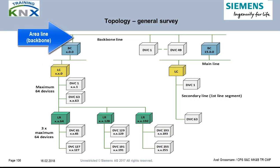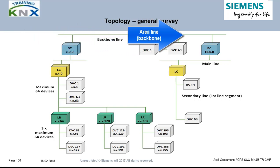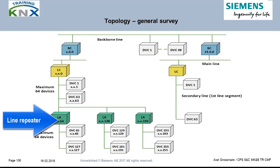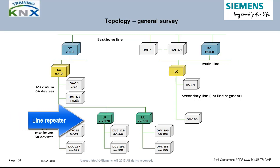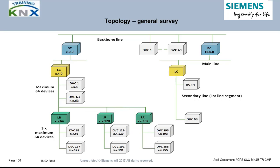The backbone or area couplers link all areas together via the backbone or area line. If no other solutions upwards or parallel are possible, lines can also be extended downwards using a so-called line repeater. Three line repeaters per line are permitted, connecting the same number of line segments to the first one. Addressing, device number limitations, and the disadvantages of line repeaters will be explained on the following pages.